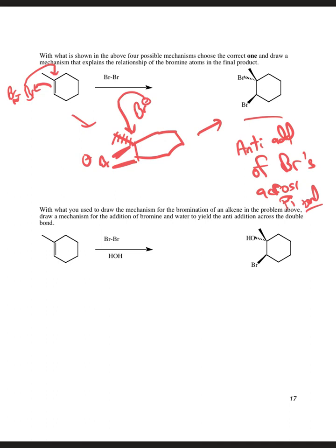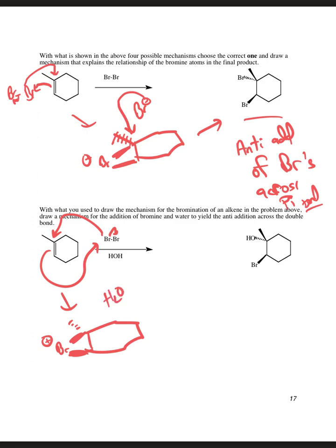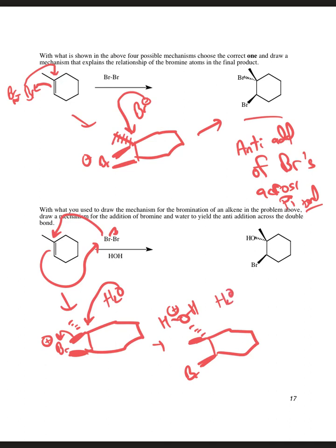The bromines always add anti to one another. For halohydrin formation, the same thing happens first: we attack a bromine, kick one out, and the bromine forms the bromonium ion. Anytime we have a halogen, we're going to form the bromonium ion. Then our nucleophile is not bromide but water, because there's a lot of it around as the solvent. Water adds from the backside. This bromine of the bromonium ion stays put, and the other carbon ends up with the OH₂⁺ going back. Then we remove the extra hydrogen off, giving us the halohydrin.